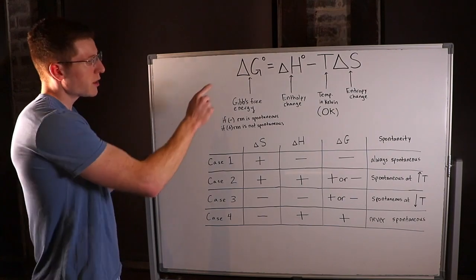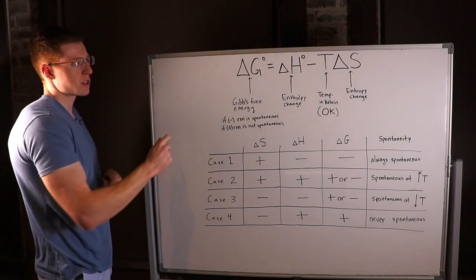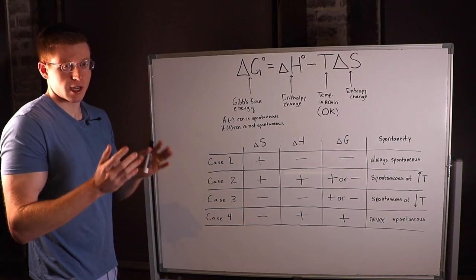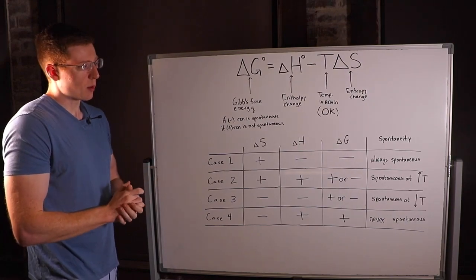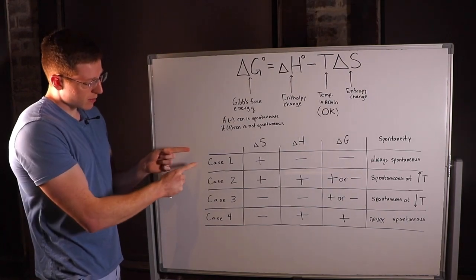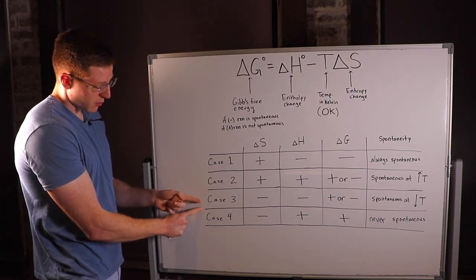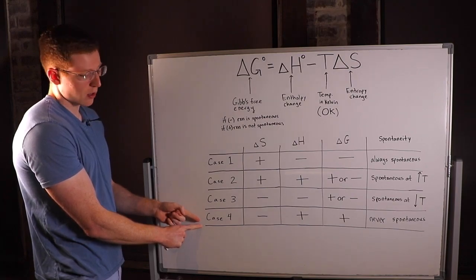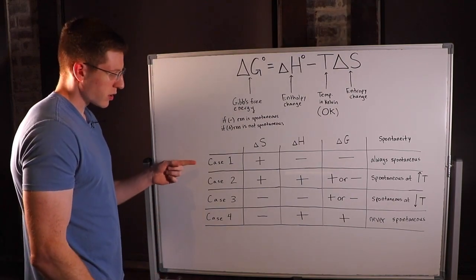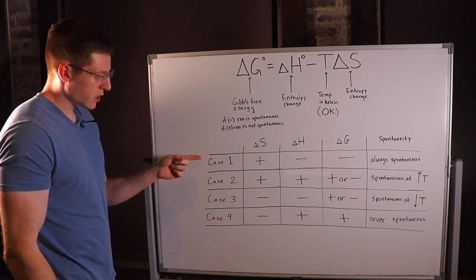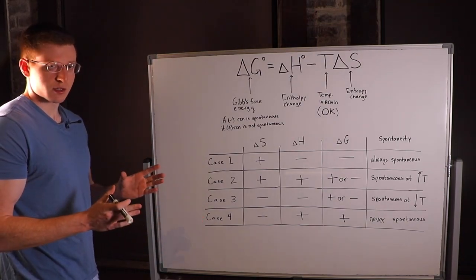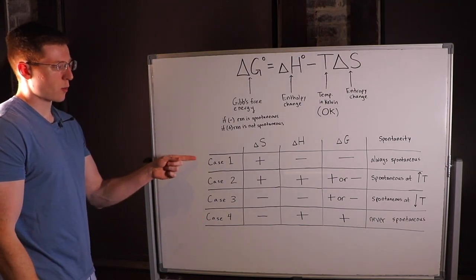So we know this equation allows us to determine whether or not a reaction will proceed spontaneously, but what are some of the possible outcomes? I have them listed out here in four different cases that you have to know. Cases 1 and 4 are actually the easiest to understand, so let's start with those.